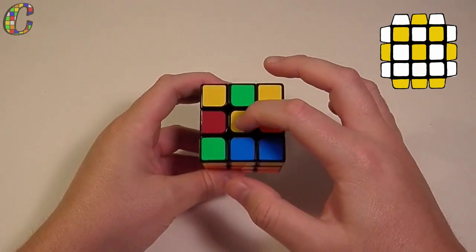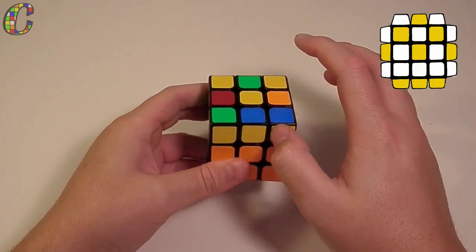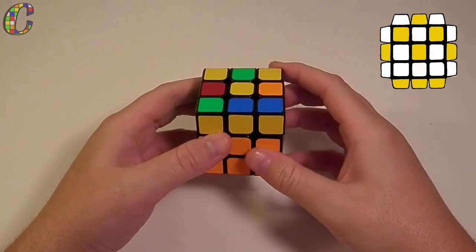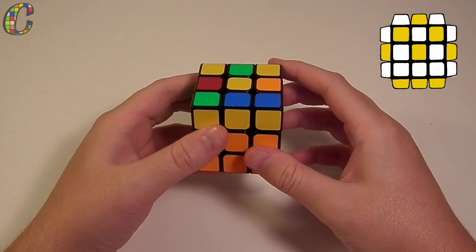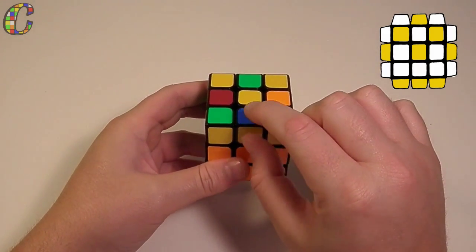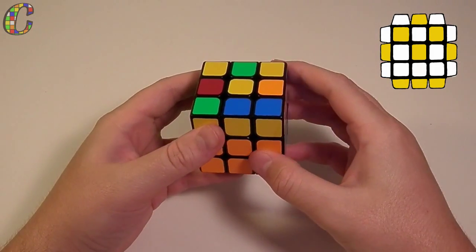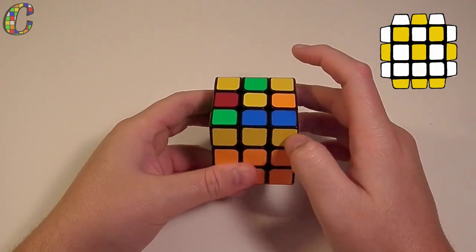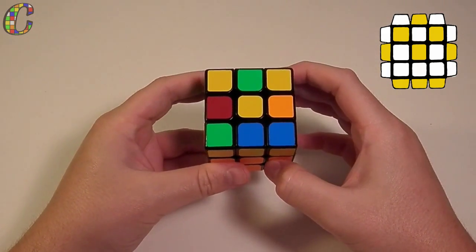So if your cube is in this orientation, look down here. If it's a three by one bar facing you, you have OLL number 18. If just this piece is facing you and the two corners are facing out, it'll be the next case. But if you have this three by one bar, you know it's OLL number 18.